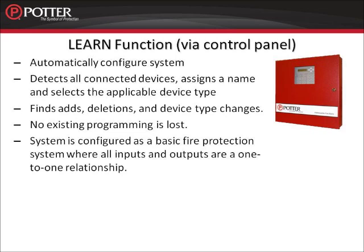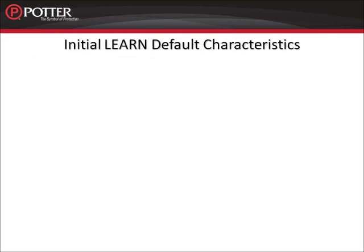When the LEARN function is accepted, the system is configured as a basic fire protection system where all inputs and outputs are in a one-to-one relationship. To better understand this one-to-one relationship, we first need to look at the initial default characteristics of all of the devices found during the LEARN process.